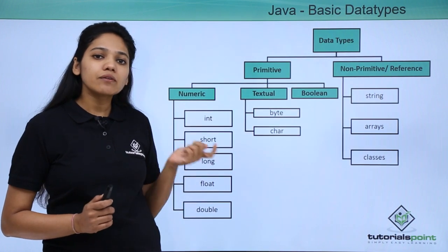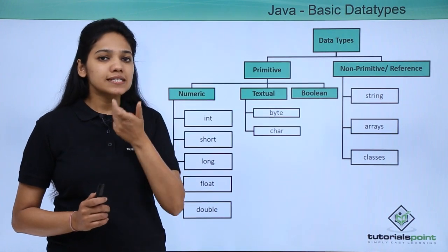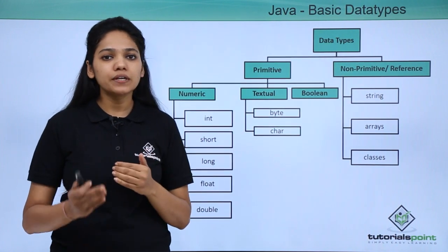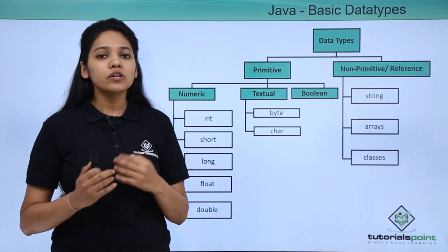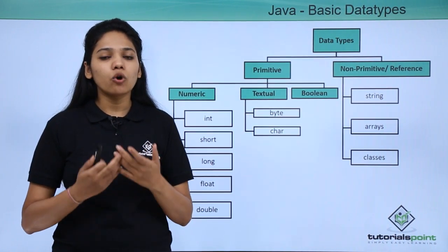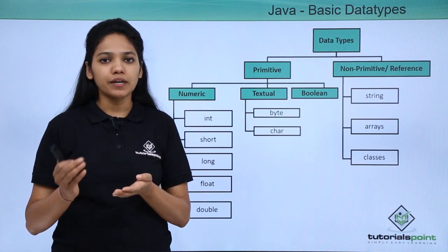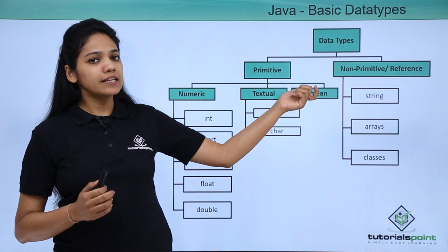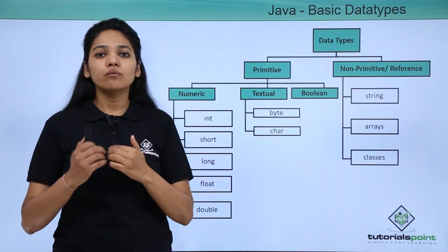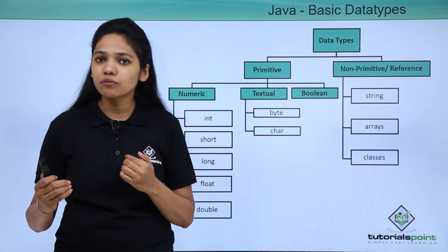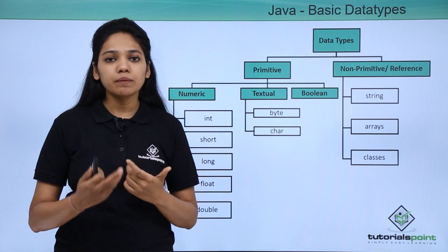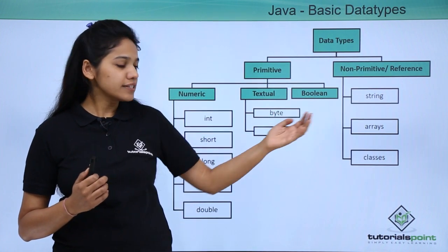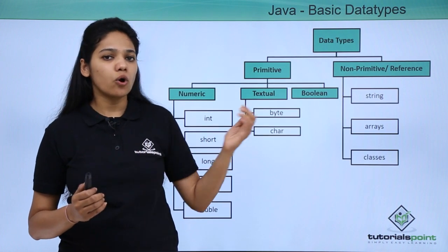Why is that difference? Because the primitive data value size is predefined, whereas in reference types you cannot predefine the value. For an example, you may not know what data or output you want to print — the string value is unknown. Therefore, you use the string data type, or when you do not know the size of the value — it may be a string, an integer, or any format — you use arrays and class objects.